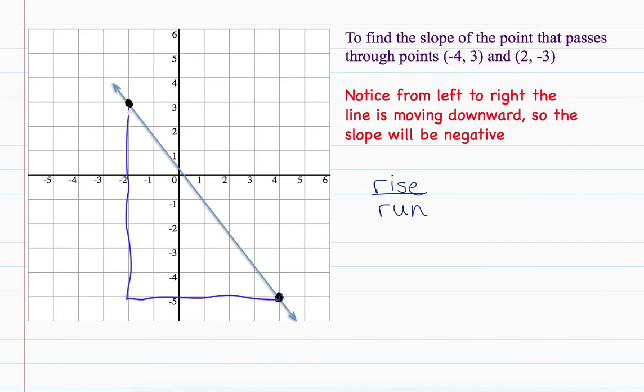So the rise is, again, it's going to be negative, it's 1, 2, 3, 4, 5, 6, 7, 8. So the rise in this case is negative 8, and my run is 1, 2, 3, 4, 5, 6. So my run is positive 6, and that can be reduced to negative 4 thirds. So in this case, the slope, or the m, is negative 4 thirds.